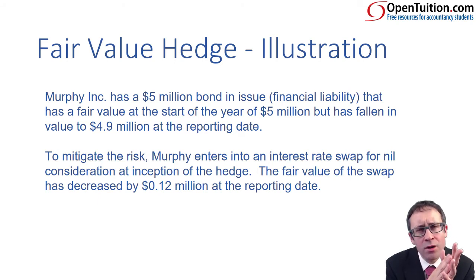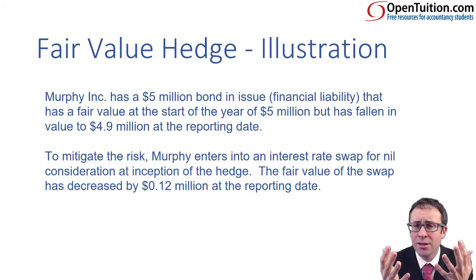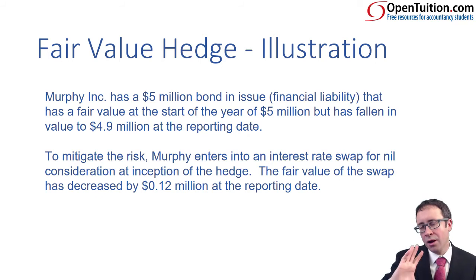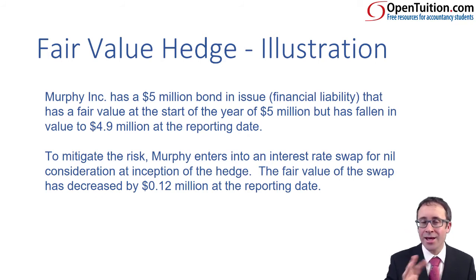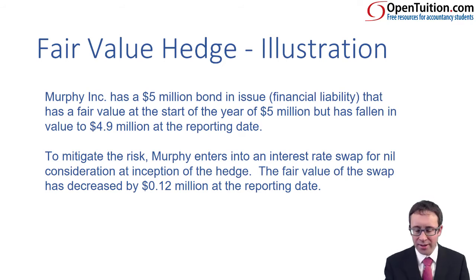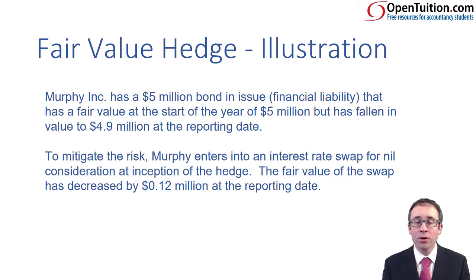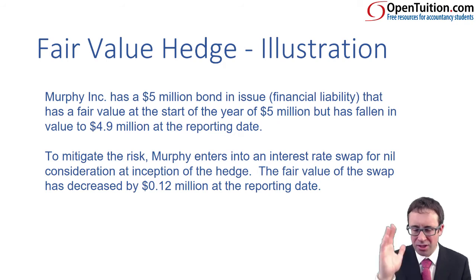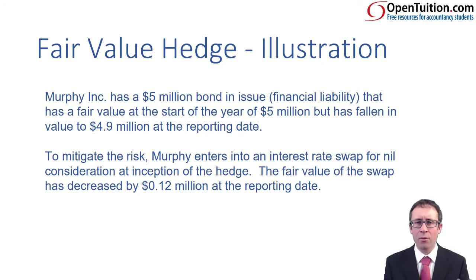The gain on the item — our loan liability has decreased, and a reduction in a liability is a good thing, so there's a gain on the liability. Therefore there must be a loss on the instrument. The loss on the instrument is $0.12 million, and the gain on the item is $0.1 million, so it's not perfectly effective — there's a slight inefficiency due to basis risk. Don't worry about that; we want to worry about the accounting. You will be given the numbers in an exam question.